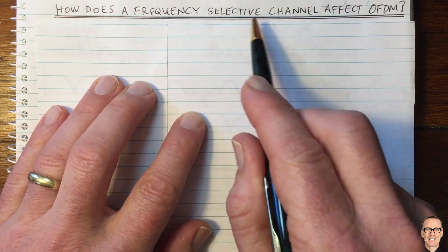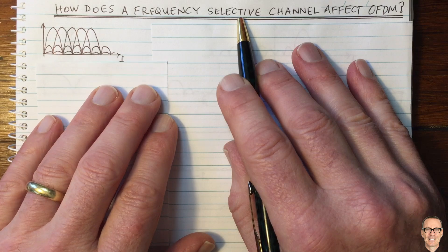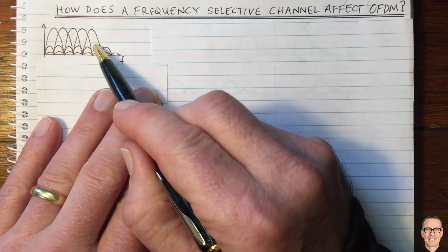How does a frequency selective channel affect OFDM? Well, here we've got the typical picture of OFDM showing the different sub-carriers.